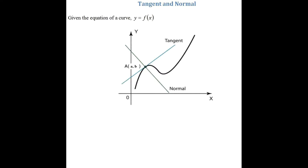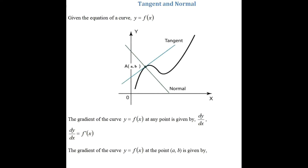In order to work out the gradient of a curve, the gradient of the curve y equals f of x at any point is given by dy over dx. To work out the gradient at any point on the curve, all we do is differentiate. If we differentiate y equals f of x, dy over dx will be f prime of x. The gradient at the point (a, b) is given by m1, so m1 equals f prime of a. To get f prime of a, replace the x in dy over dx by the x-coordinate of the point, which is a.